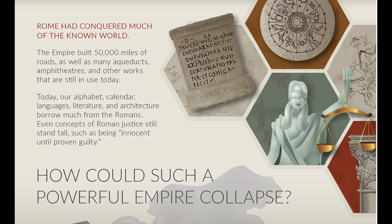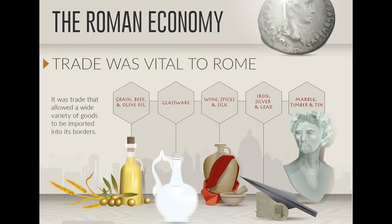Trade was vital to Rome. It was trade that allowed a wide variety of goods to be imported into its borders: grain, beef, olive oil, glassware, wine, spices, silks, iron, silver, lead, marble, timber, and tin. Trade is always talked about — in presidential debates, on CNBC, on any financial news network. Trade is a major part of any civilization's economy, just as it is with modern economies to this very day.